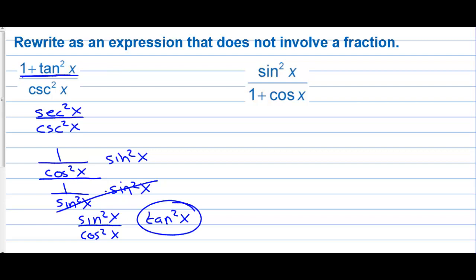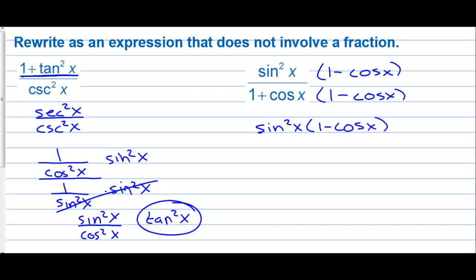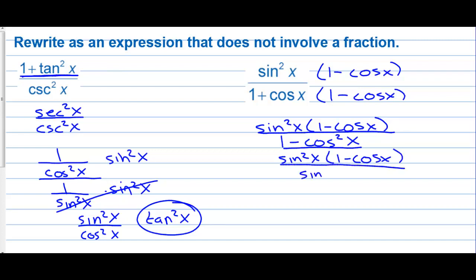On the second one, let's multiply by the conjugate of the denominator — one minus cosine of x on the top and the bottom. On the top, we have sine squared x times one minus cosine of x. In the denominator, we end up with one minus cosine squared x. One minus cosine squared x is sine squared, so we have sine squared times one minus cosine over sine squared. These two cancel, and we're left with one minus cosine x, which is not a fraction.